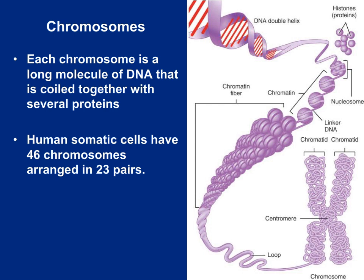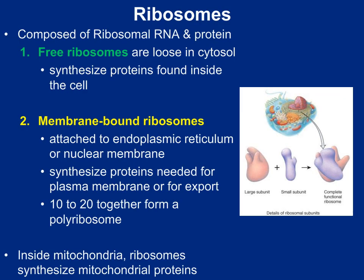To recap: a chromosome is simply DNA wound around a protein, and these chromosomes are found within the nucleus. One of the first organelles found outside the nucleus is the ribosome. Ribosomes are manufactured inside the nucleolus of the nucleus and are composed of ribosomal RNA as well as some protein. RNA stands for ribonucleic acid — unlike DNA, RNA molecules are single-stranded, whereas DNA molecules are double-stranded.